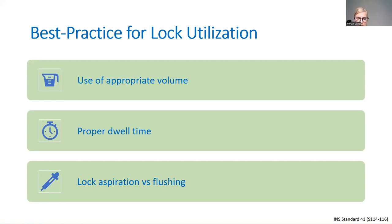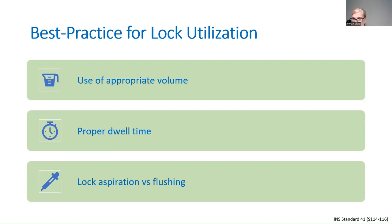Best practices for lock utilization: use the appropriate volume to fill the catheter and port reservoir. Dwell time should be at least two hours — ideally until the catheter is needed again. For antimicrobial locks, they should always be aspirated to help prevent antibiotic resistance. For ethanol locks, there is debate — some institutions withdraw, some flush through, so defer to your institution's policy.